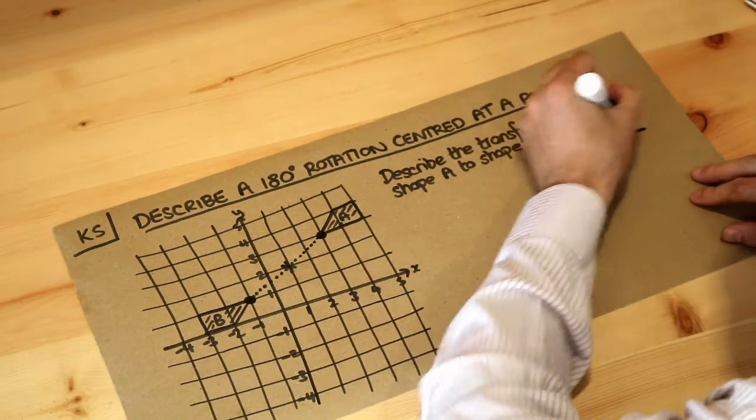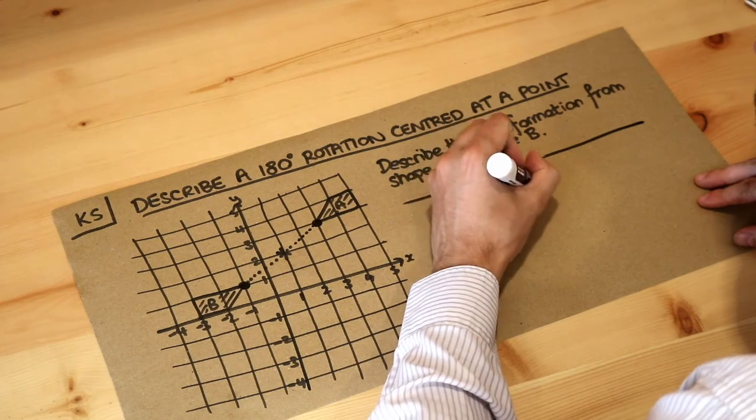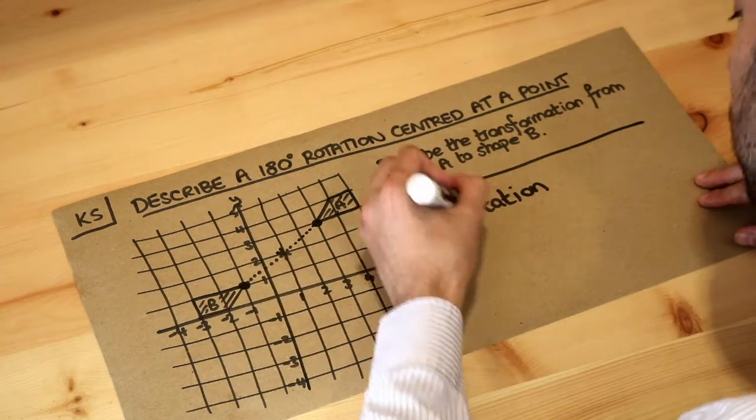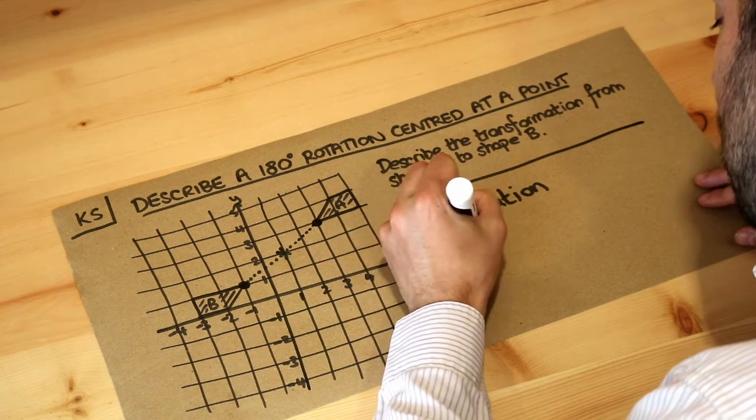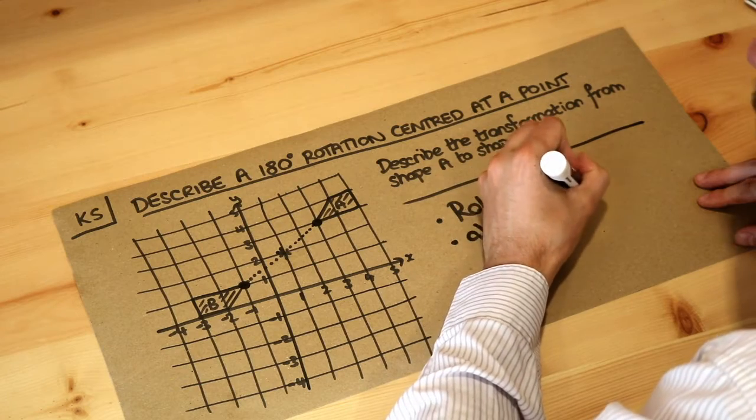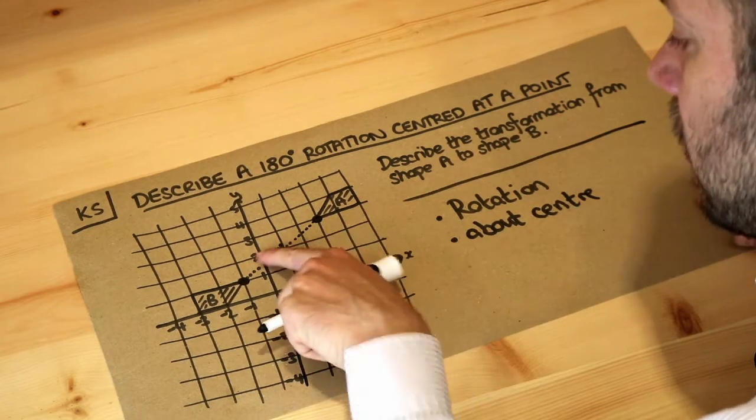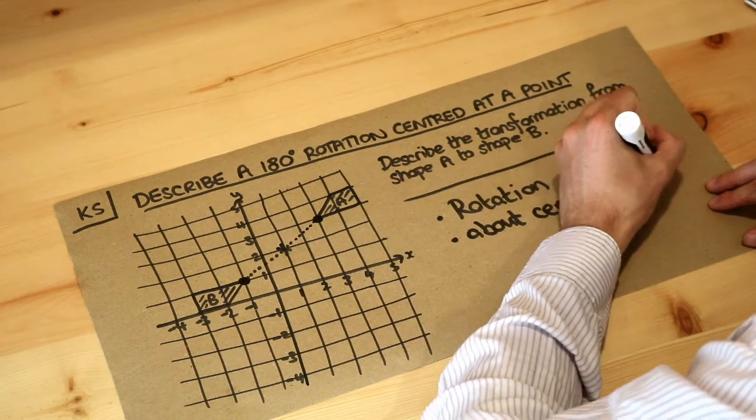Let's describe this. We always say it's a rotation to distinguish it from a reflection or enlargement. We need to say the center, so about the center, and then read off the coordinate of that point - this is the point (1, 2). Remember, give the x value first (1) then the y value (2), and we need to say what we spun it by.